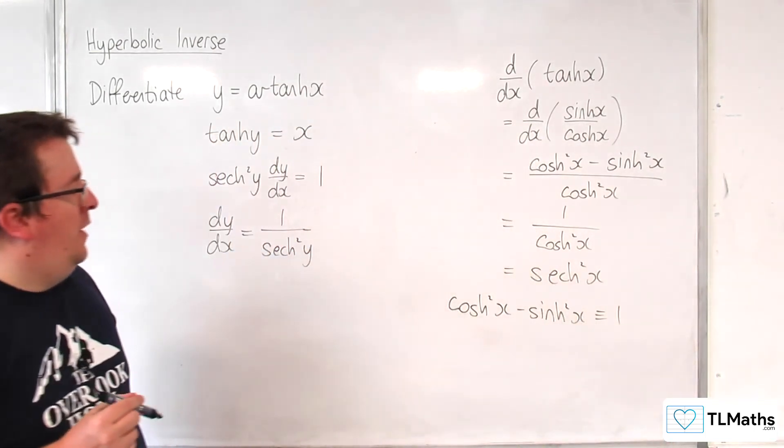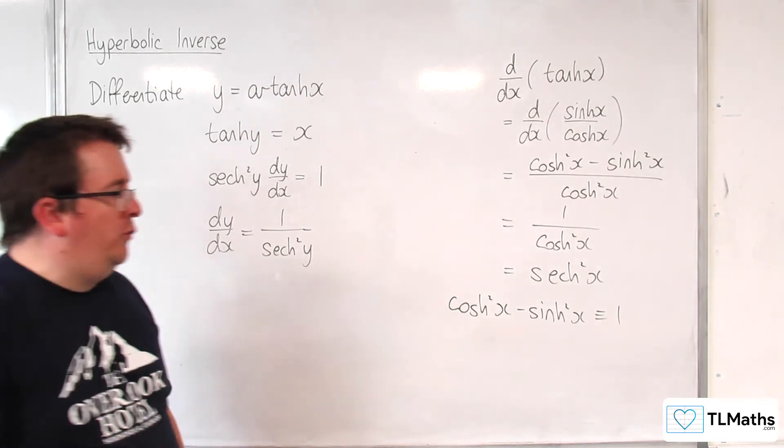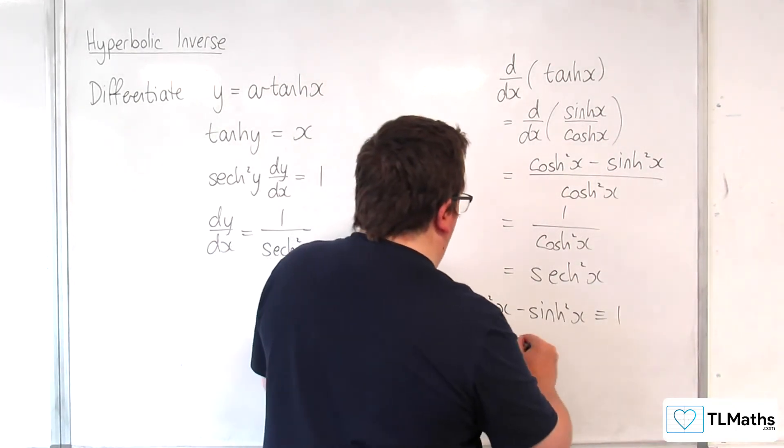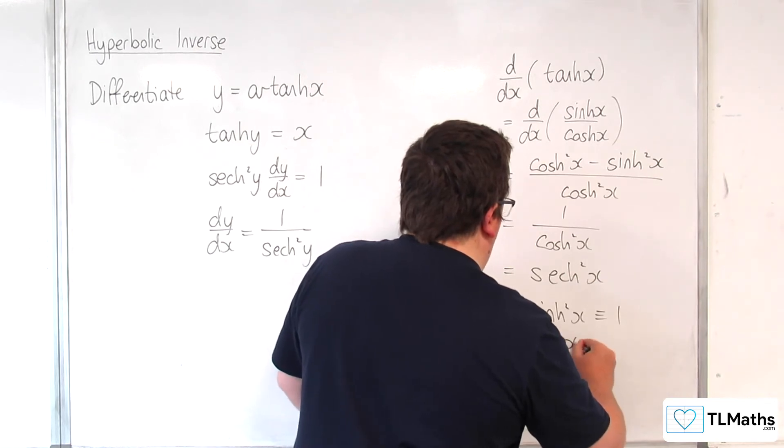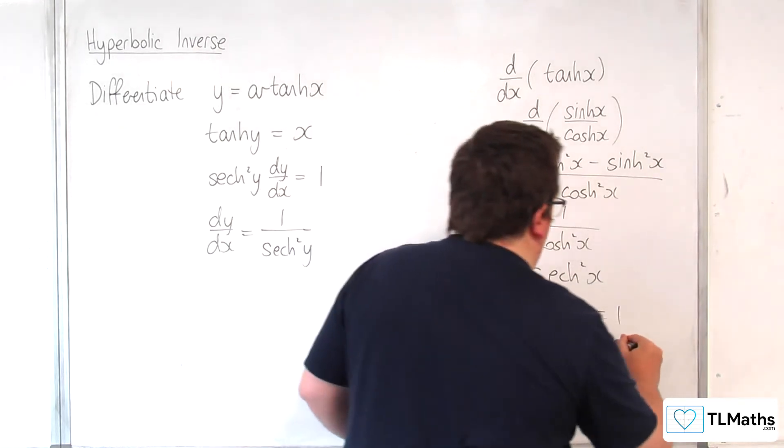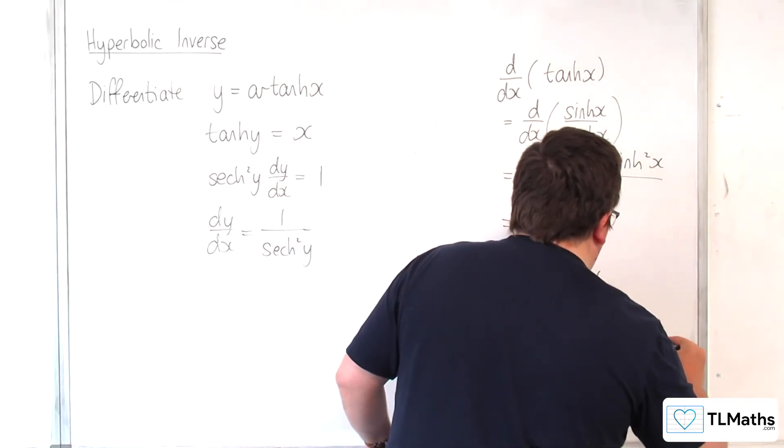If we divide through by cosh squared, we get 1 take away tanh squared x is equivalent to sech squared x.